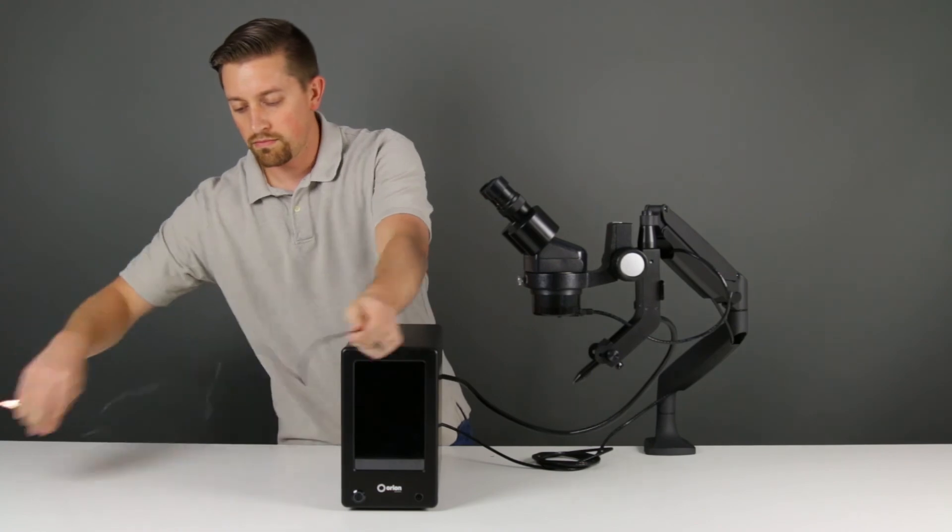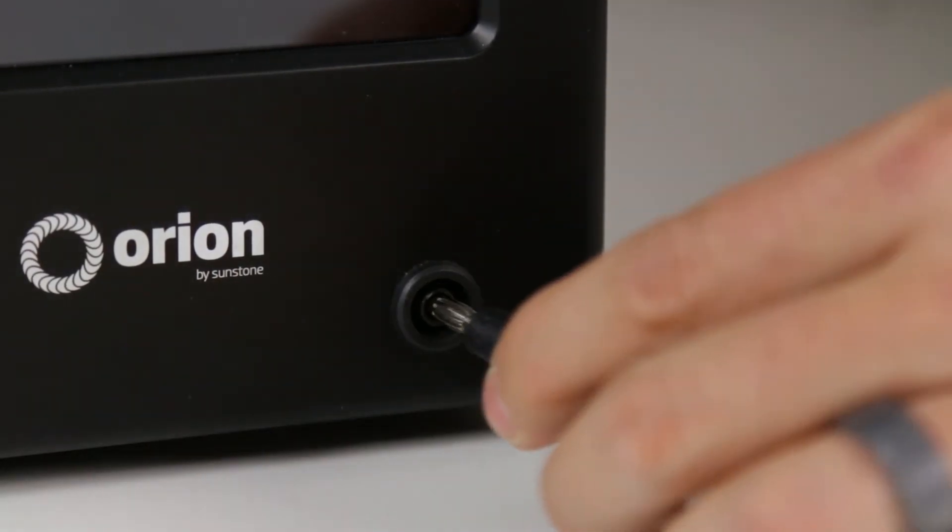Connect the alligator clip into the port on the front of the welder on the opposite side of the power button.